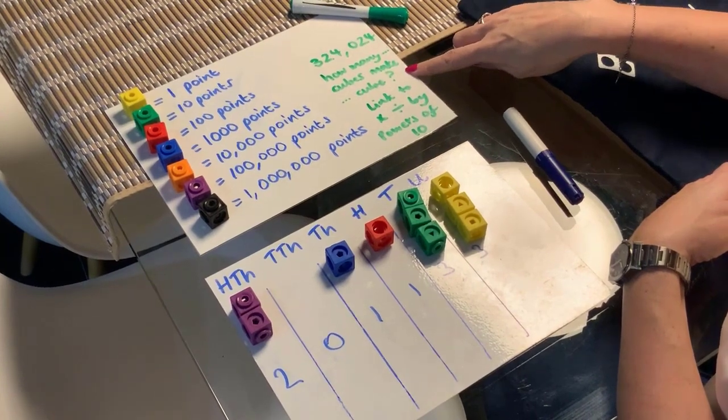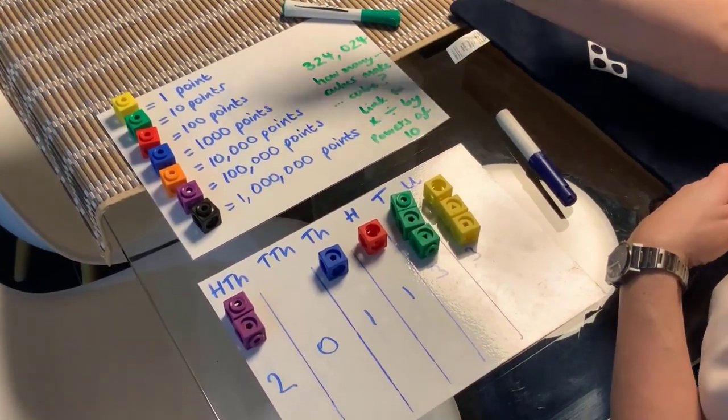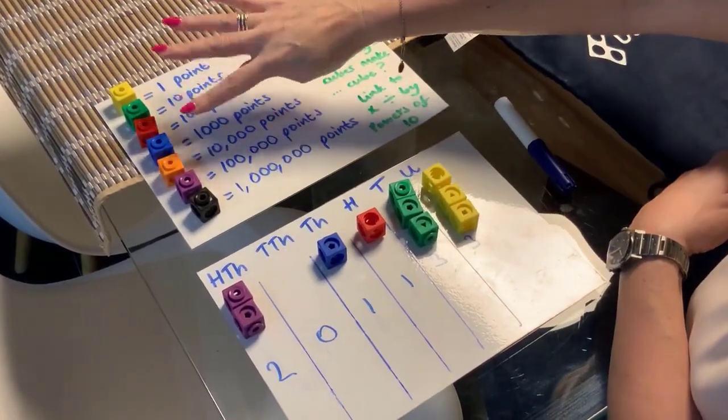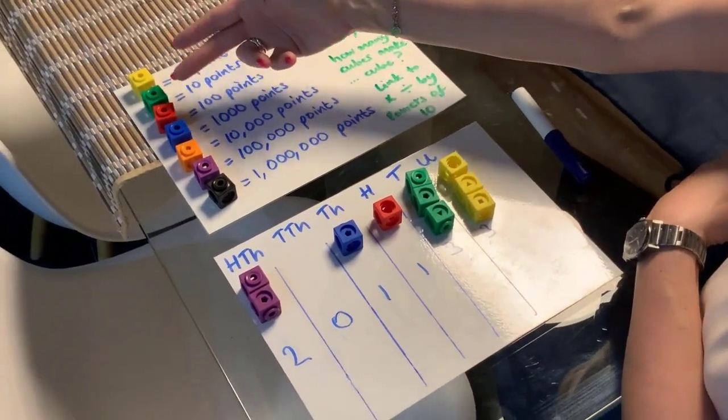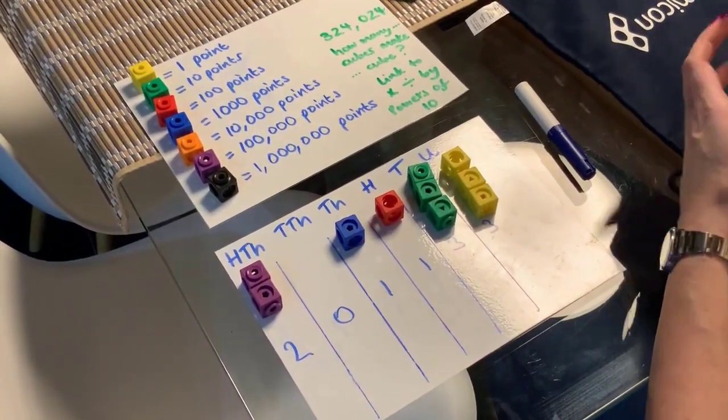And then also you could think about looking at how many cubes of one color make another one. So we could look at how many green cubes would you need to make a blue one? So we're looking at the relationship between the two. Or how many red ones would it take to make a purple one? Really important links being made there.